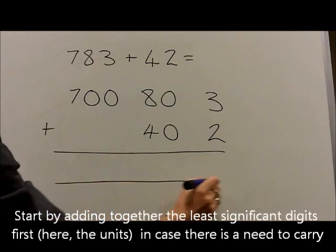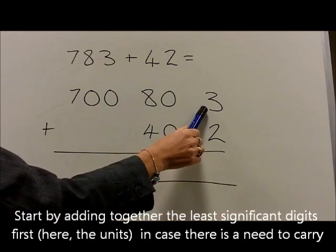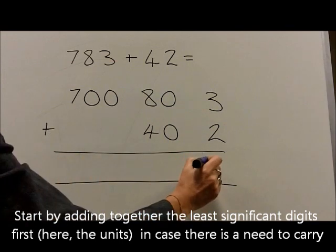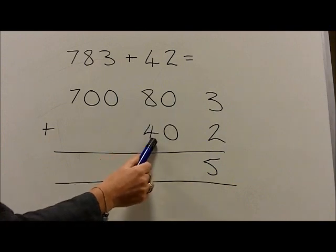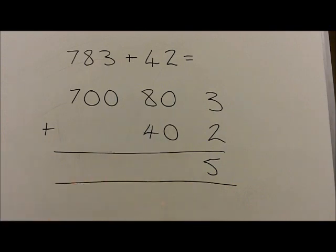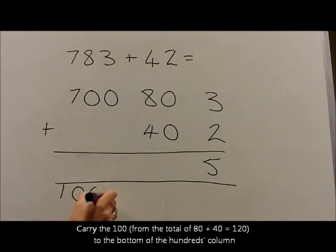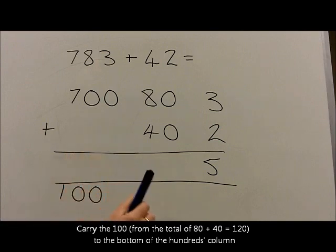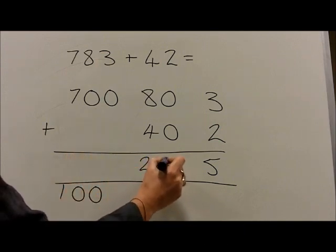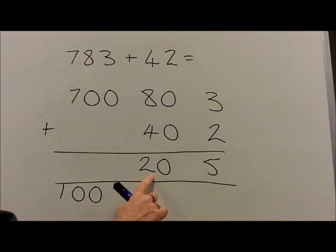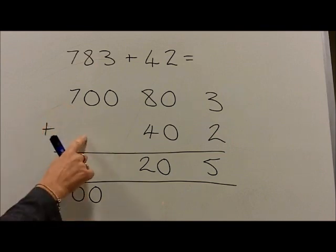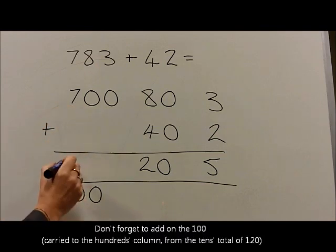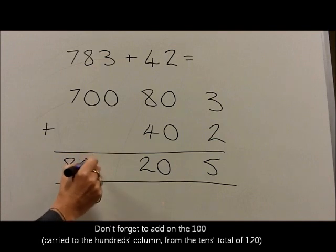We then add these together again, starting with the units first, so that 3 plus 2 equals 5. There's no need to carry. We've then got 8 10s plus 4 10s, which are 12 10s, which are 100 and 20. We write that as 100 underneath the 100s column and 2 10s, which are 20, in the 10s column. We then add the 100s together: 700 plus 0, plus 100, gives us 800 altogether.